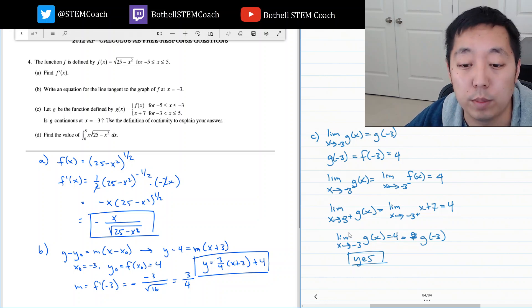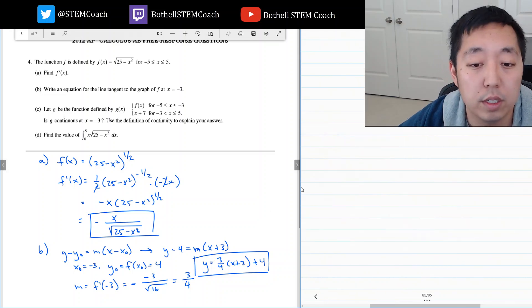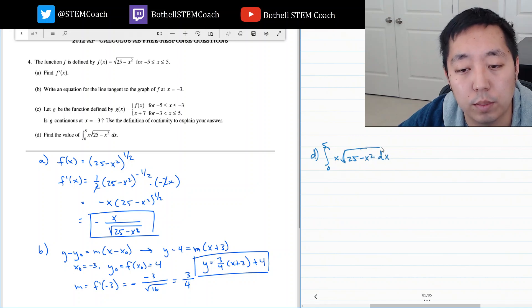And the last part, which I'm a little out of space on. I'll just make another page here. d is find the value integral 0 to 5 x square root of 25 minus x squared dx. Okay, so we got to compute this integral.